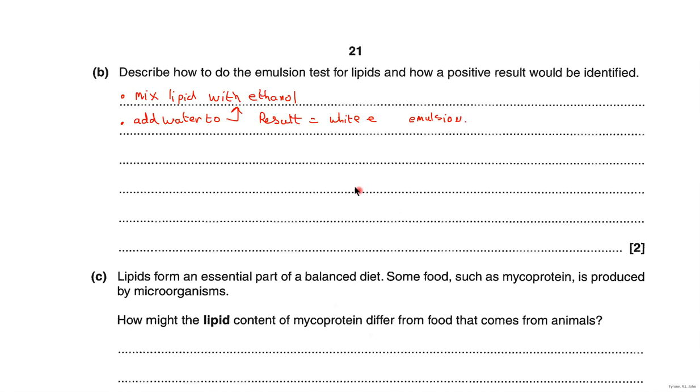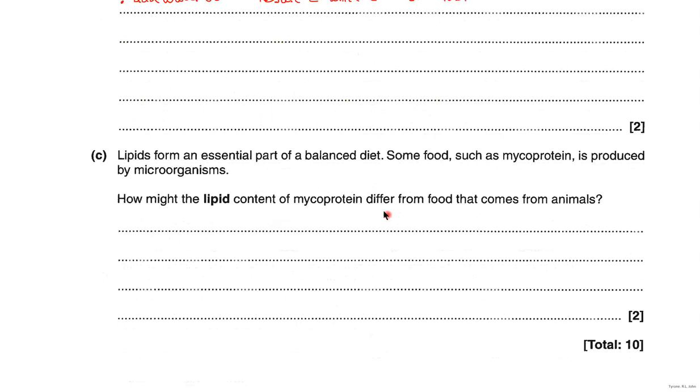Part C: lipids form an essential part of a balanced diet. Some foods such as mycoprotein are produced by microorganisms — how might the lipid content of mycoprotein differ from food that comes from animals? Mycoprotein is actually a fungal protein, commercially often known as Quorn. It certainly doesn't have any saturated lipids, but it could have more unsaturated lipids.